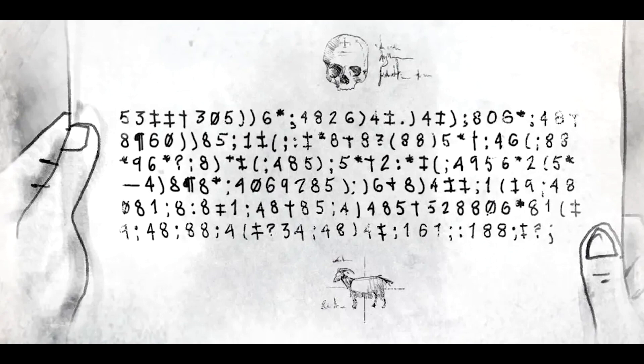After all, one human being cannot invent a puzzle which other human beings would be unable to solve. In all secret writings, the first problem is to discover the language of the code. Generally, trial and error is the only way. But here, the signature gave it away immediately.